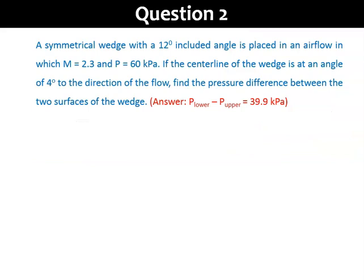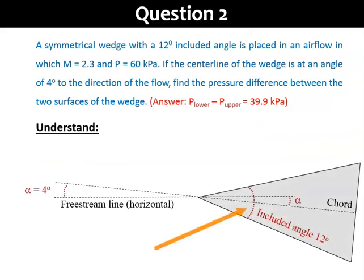In question 2, we have a wedge with an included angle of 12 degrees, an angle of attack of 4 degrees, a Mach 2.3 flow, and a static pressure P1 of 60 kPa. We need to find the pressure difference between the upper and lower surfaces of the wedge. When we draw the diagram to understand the problem better, we need to be careful with its geometry, especially on its angle of attack. Recall that the standard definition of alpha is the angle between the freestream and the chord of the object.